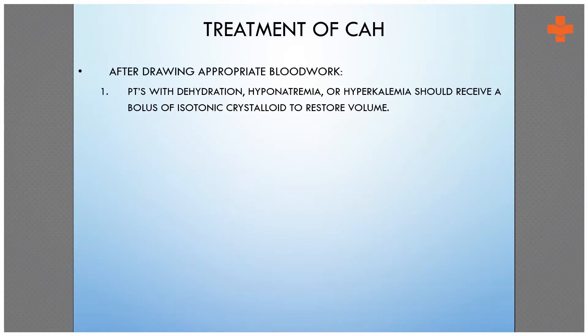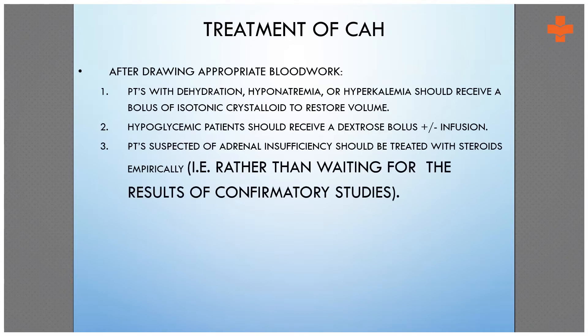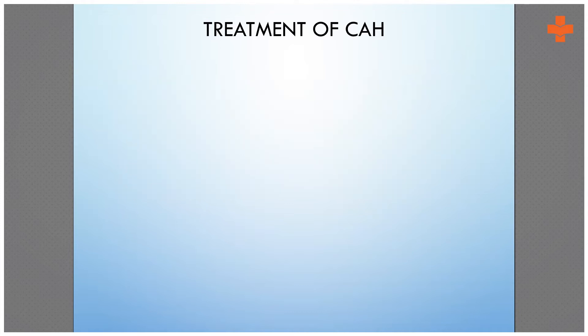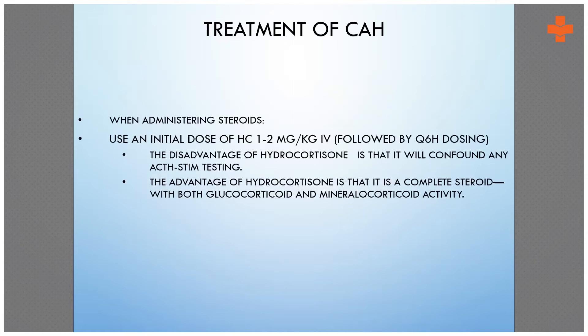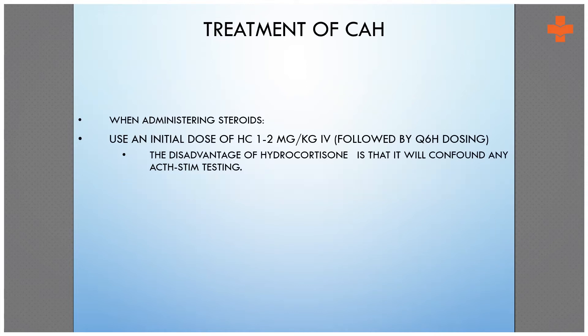How do we treat this? We basically assess the dehydration, treat hyponatremia, hyperkalemia, and hypoglycemia. When we administer steroids in these cases, it should be hydrocortisone 1 to 2 mg per kg IV, which should be followed by a six-hourly dose.